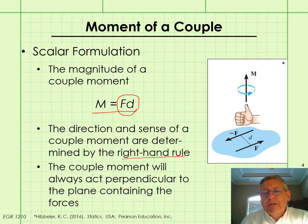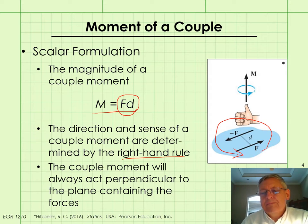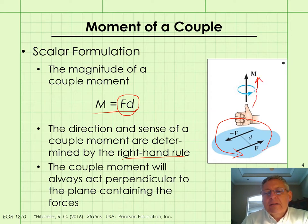In other words, you can see that these forces are trying to create a counterclockwise motion, and so if we wrap our fingers in that direction, then the resulting moment vector is going to be in the direction of our thumb. It will always act perpendicular to the plane containing the forces.